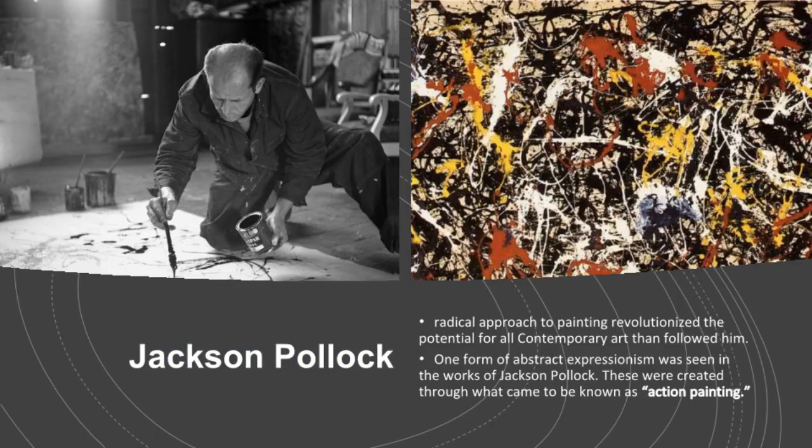Jackson Pollock's radical approach to painting revolutionized the potential for all contemporary art that followed him. Action painting: Pollock worked on huge canvases spread on the floor, splattering, squirting, and dribbling paint with seemingly no pre-planned pattern or design in mind. The total effect is one of vitality, creativity, energy made visible. Pollock's first one-man show in New York in 1943 focused worldwide attention on Abstract Expressionism for the first time. One form of Abstract Expressionism was seen in the works of Jackson Pollock, created through what came to be known as action painting.